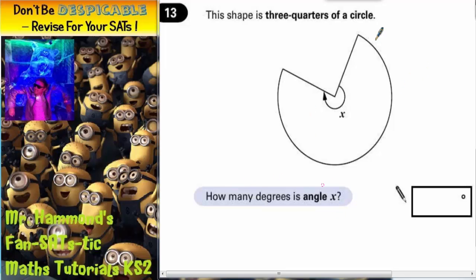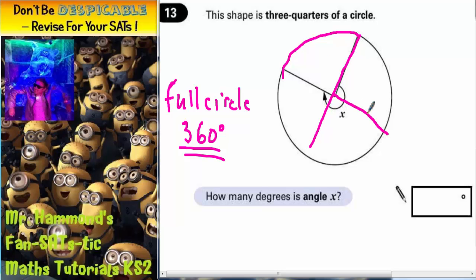Well, what we should know is that a full circle is 360 degrees. So let's pretend that this is a full circle. The whole thing would need to be 360. So if we split this into quarters, what would need to go in each quarter?